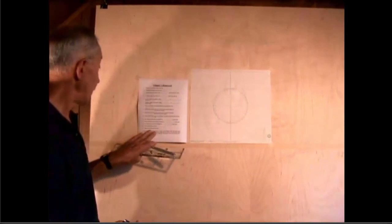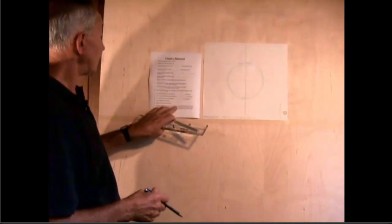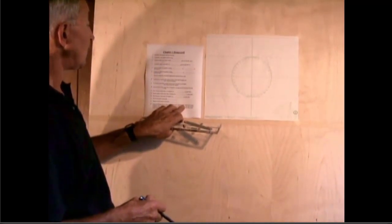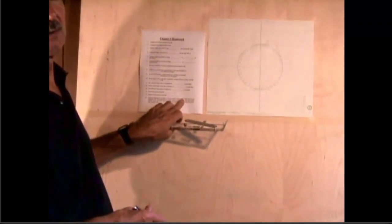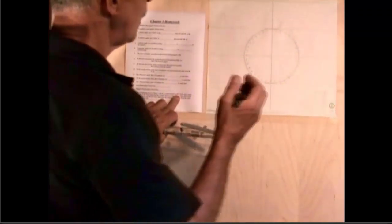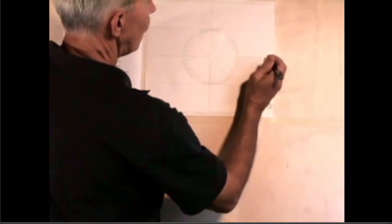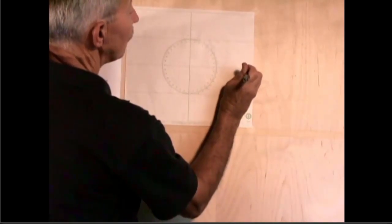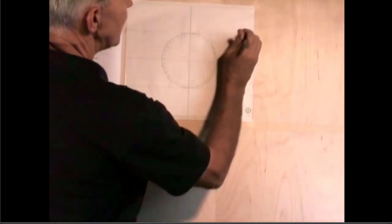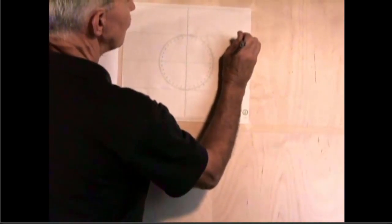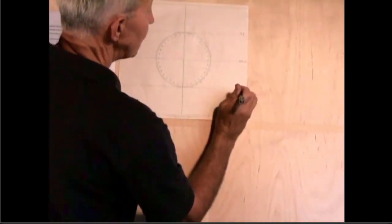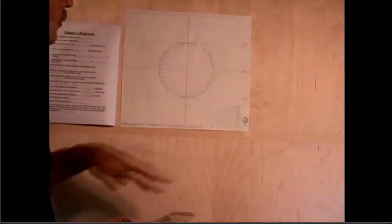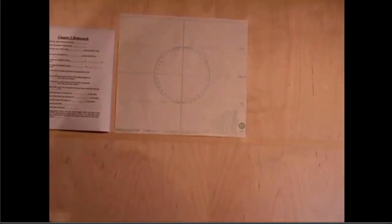So the question here asks to set up this Universal Plotting Sheet for a location at 50 degrees north latitude. So I'm going to write on the center latitude here 50 north. That makes this 51 north and it makes this 49 north. So 49, 50, 51 north latitude.